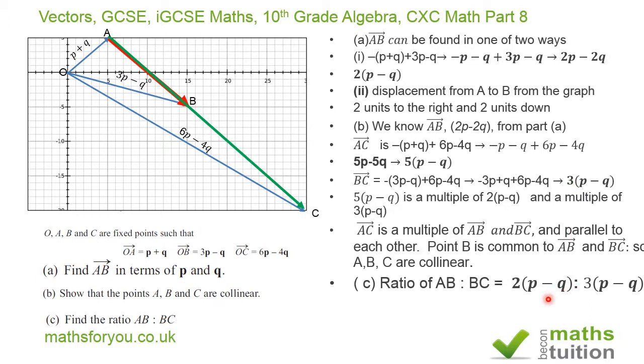The P minus Q will cancel out, and you end up with the ratio AB to BC being 2 to 3.